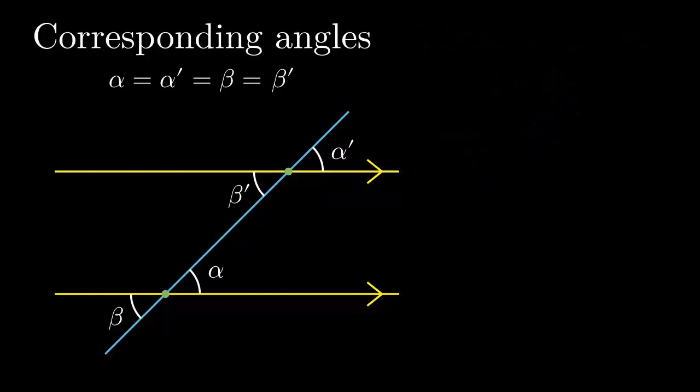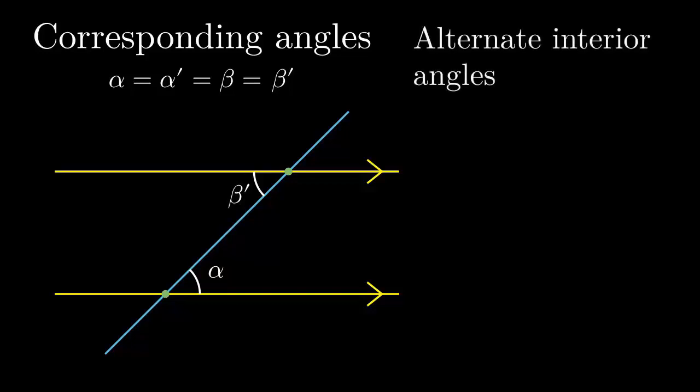Please note that alpha and beta' are here. They are the same too. This is called alternate interior angles. I said here interior because these are alternate exterior angles. They also have the same measures.